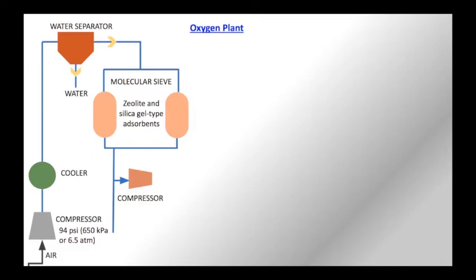One important thing to note is that we keep two parallel sieves because each sieve has to be flushed and cleaned periodically. When one sieve is being cleaned, air passes through the second sieve, and vice versa. That is the importance of keeping two parallel sieves.